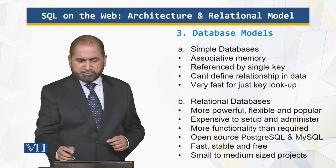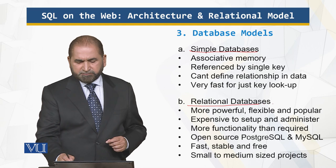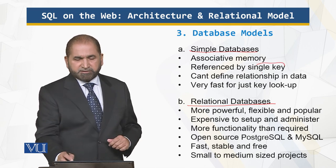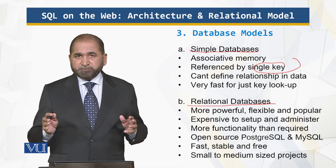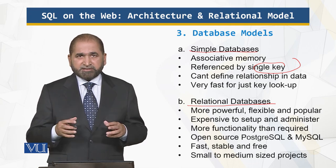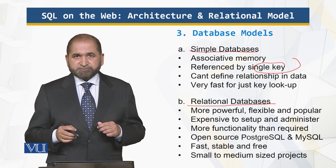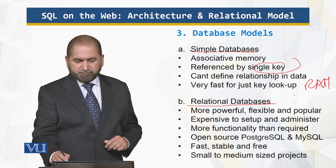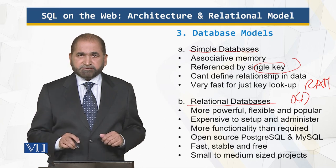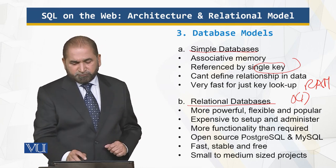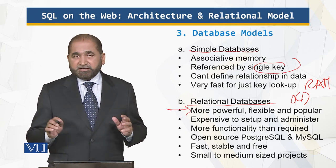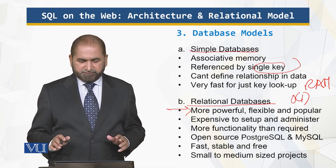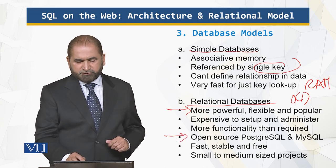There are two database models: simple databases and relational databases. Simple databases are just associative memory, like an array referenced by a single key. You cannot define relationships between records. They are very fast to look up — order one time, like random access memory — but not as powerful as relational databases. Relational databases are expensive to set up, but have all imaginable functionality. There is open source as well, which is fast and reliable.